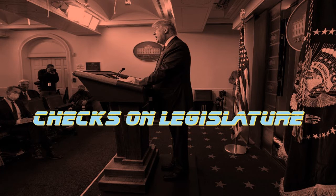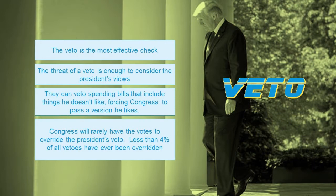The first checks we're going to look at are those the president has over the legislative branch. The most obvious check is the power of the veto — the president's most effective check over the legislative branch. The veto allows the president to reject a bill that Congress has passed, so even if it passes both the House and the Senate, the president can veto it.